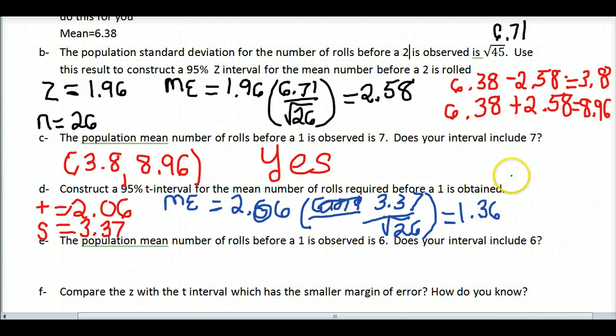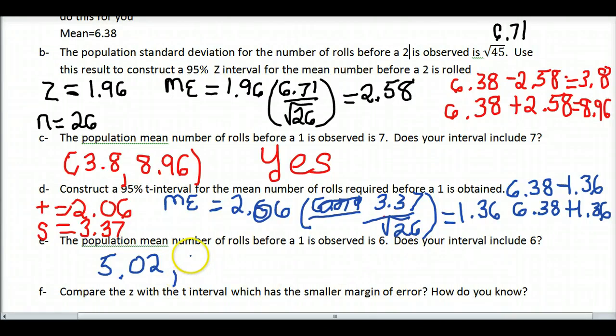To find the lower confidence level, we subtract that from our mean. To find the upper, we add. I'm going to run out of room to write it here, so I'll write it right down below. My lower is 5.02, and my upper is 7.74. From there, you should be able to answer the other questions as to what your confidence interval contains and which has the smaller margin of error, recalling that we calculated the margin of error on the way to finding the confidence level.